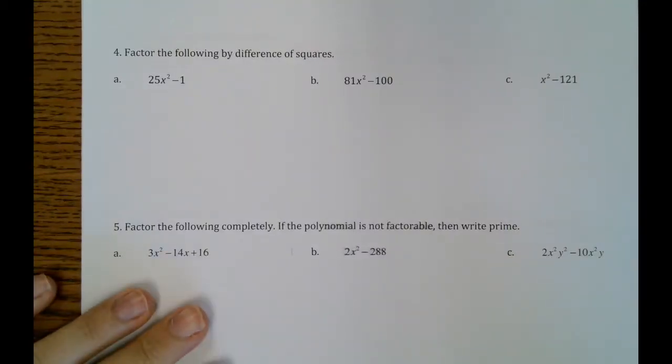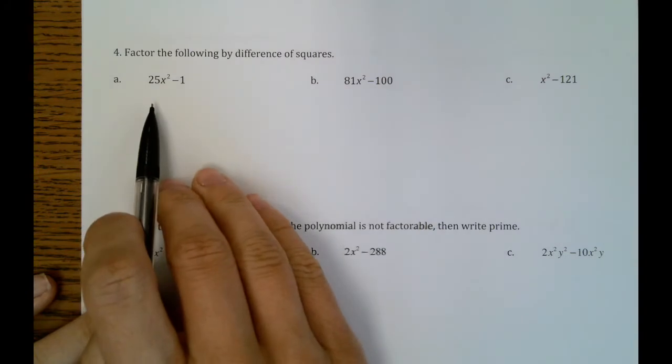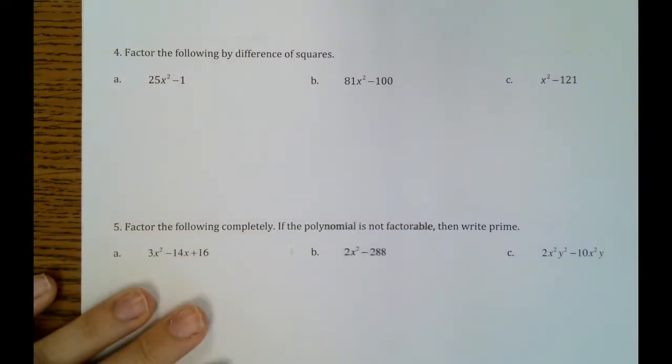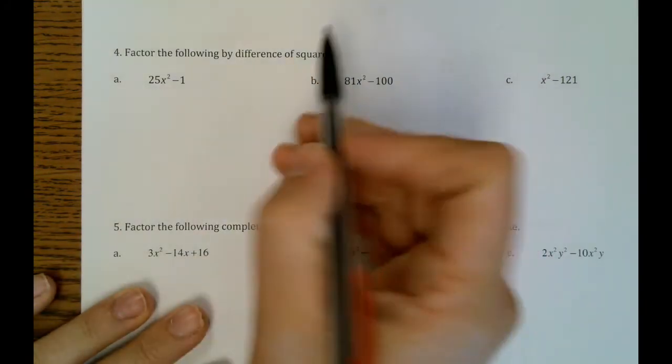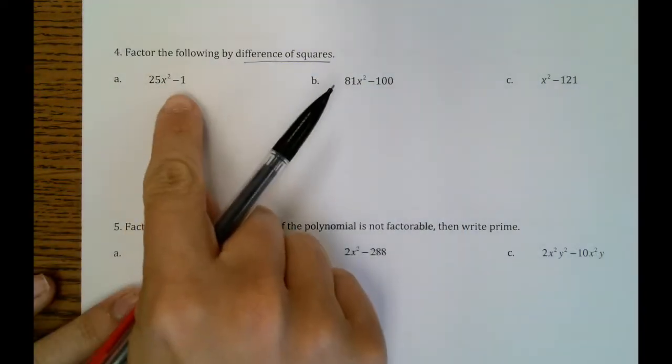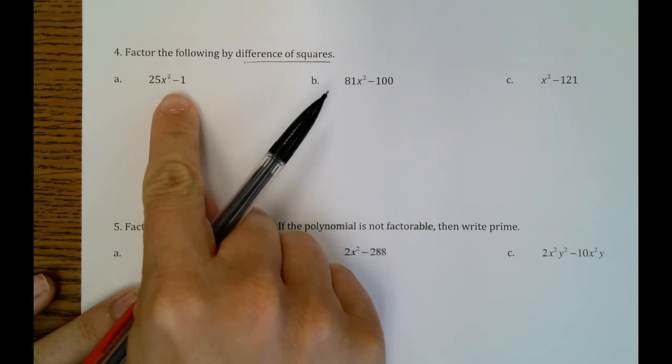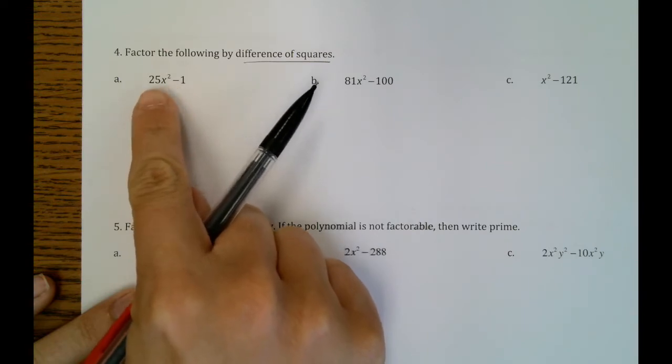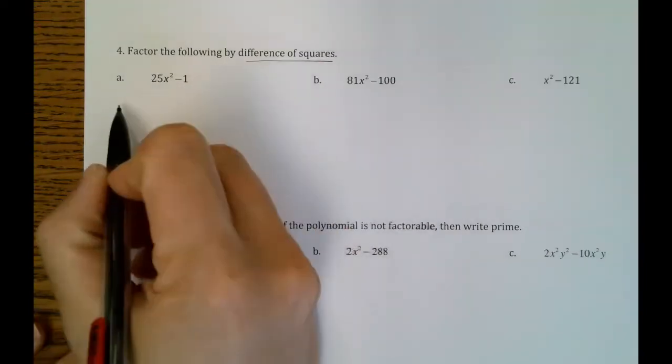All right, we are on page 19, number 4 of our review here for unit 11, and we're doing difference of squares. So for difference of squares, we want to make sure we have two terms with subtraction and perfect squares. And here in A, we definitely do.